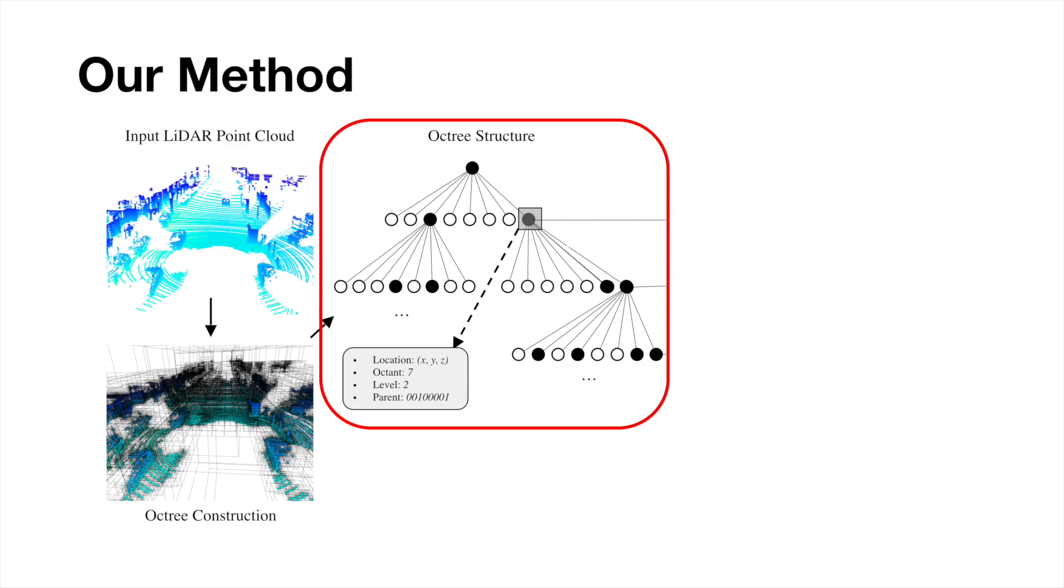Our method is built around the memory-efficient octree data structure, which is a tree data structure created by recursively partitioning the space into equal octants and storing occupancy. Such a representation is advantageous because we stop dividing a node once it only contains one point, so it self-adapts to the non-uniform sparsity of LiDAR point clouds.